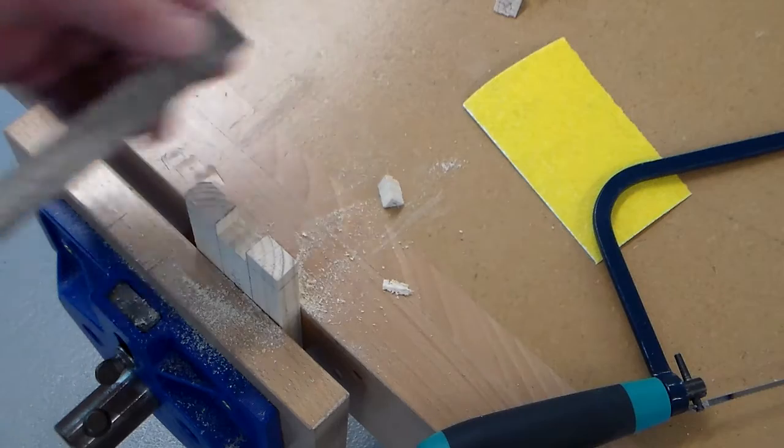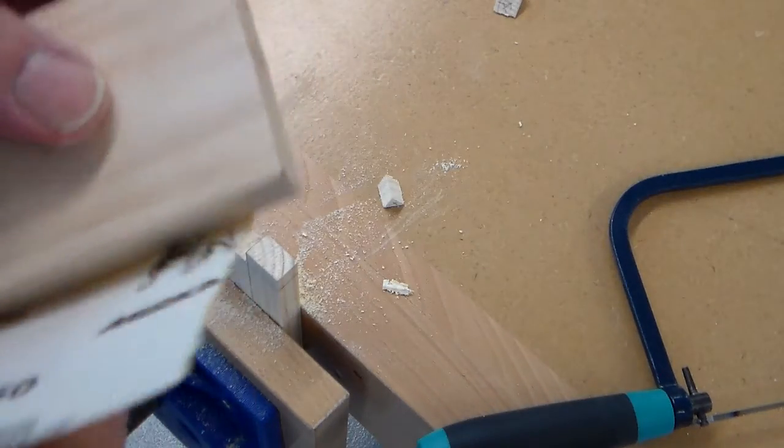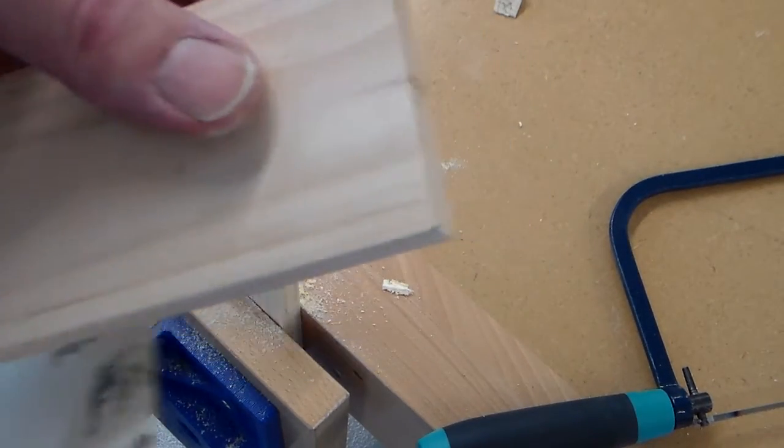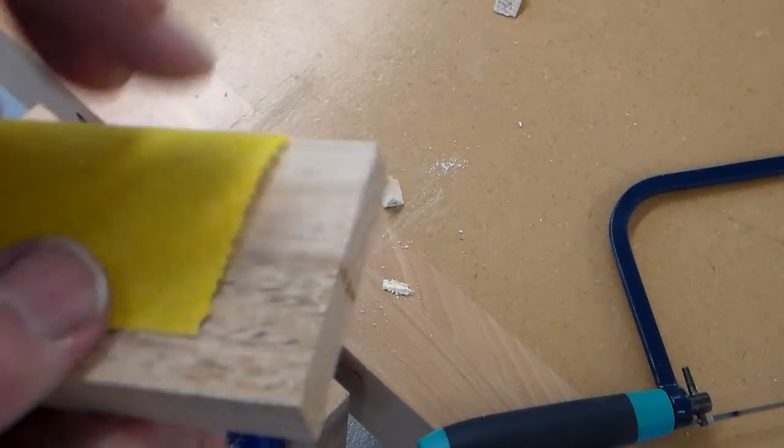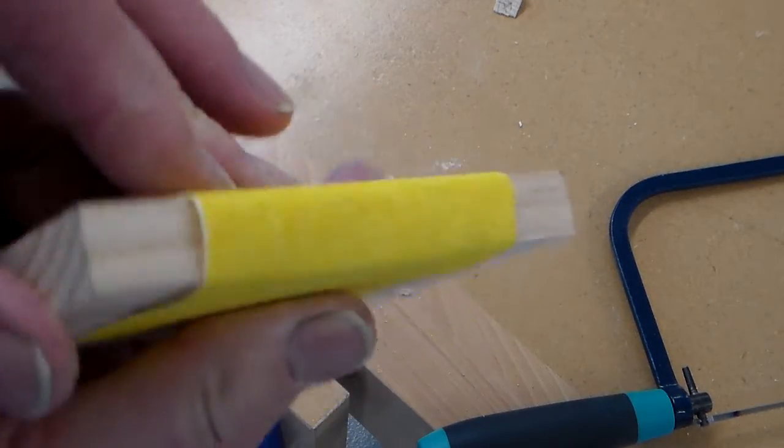What we're going to do is take our second piece, our side, so this is the one that I haven't marked out yet. Taking a small piece of quite coarse abrasive paper, I'm wrapping it around the edge like that.